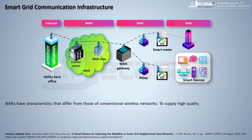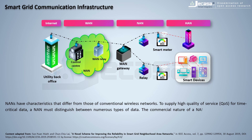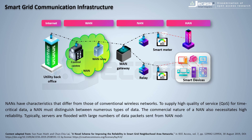NANs have characteristics that differ from conventional wireless networks. To supply high quality of service for time-critical data, a NAN must distinguish between numerous types of data. The commercial nature of a NAN also necessitates high reliability. Since servers are flooded with large numbers of data packets, wireless mesh networks can be easily deployed to provide high-speed transmission of NAN packets to central servers.